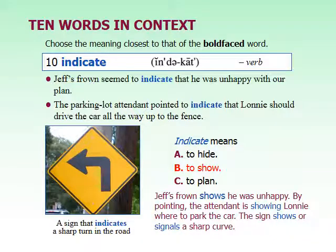To indicate means to use some sort of gesture — often not spoken — to tell someone information. Jeff's frown shows he's unhappy without him saying it. The parking lot attendant is just pointing, not saying 'go over there.' In cars, turn signals are also called indicators because they tell the person behind you which way you're turning, without you having to shout out which direction.